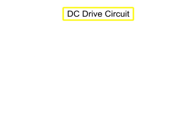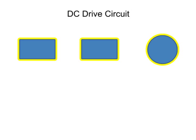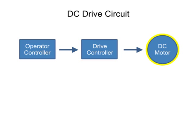A DC drive circuit is composed of three main components: an operator controller, a drive controller, and a DC motor.